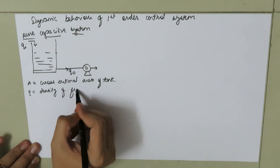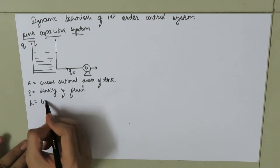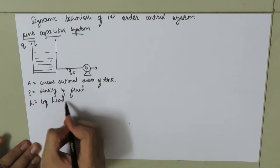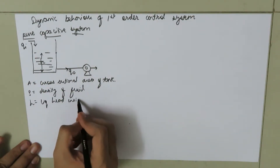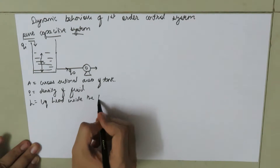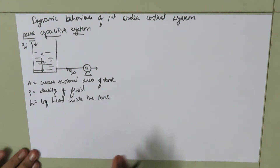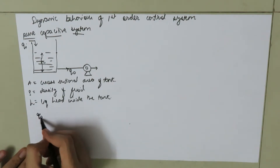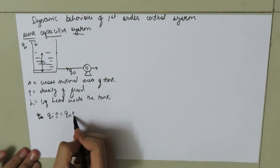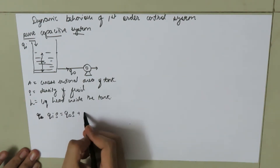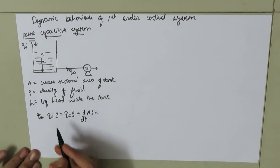Let rho be the density of fluid inside the tank, and h be the liquid head inside the tank. Now if we write the mass balance for this system, we get: qi times rho equals qo times rho plus d/dt of (A rho h).